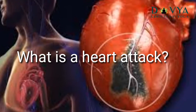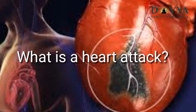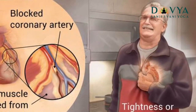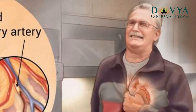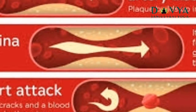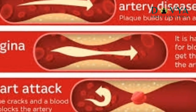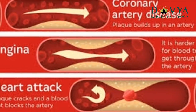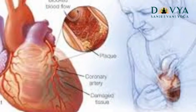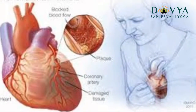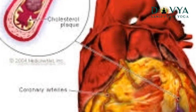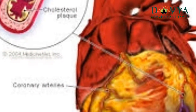Heart attack. A heart attack occurs when blood flow to a section of the heart becomes blocked and the heart muscle can't get oxygen. If the blood flow isn't restored quickly, that section of the heart begins to die. Depending on how long the blood supply is cut off, the damage can be mild, severe, or cause lifelong problems. In some cases, a heart attack can be fatal.